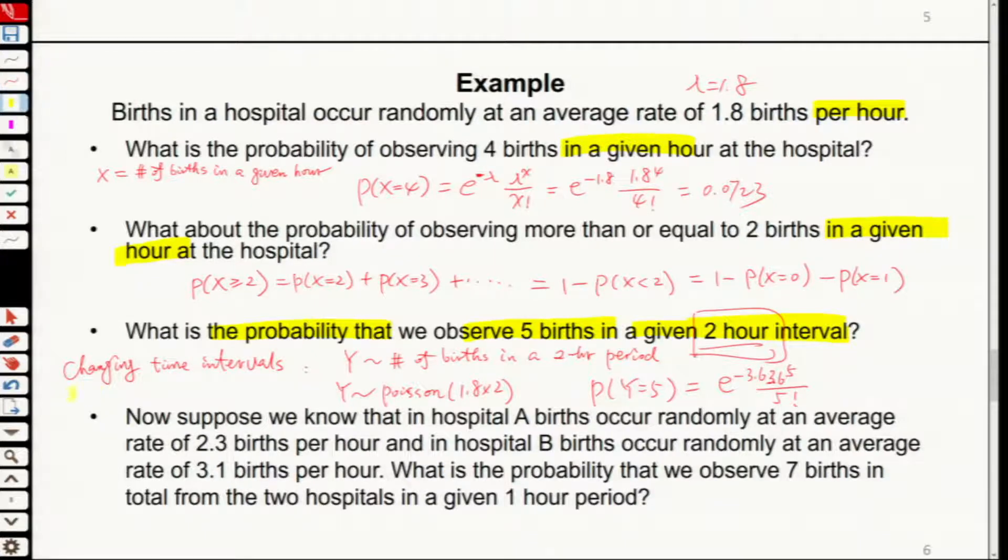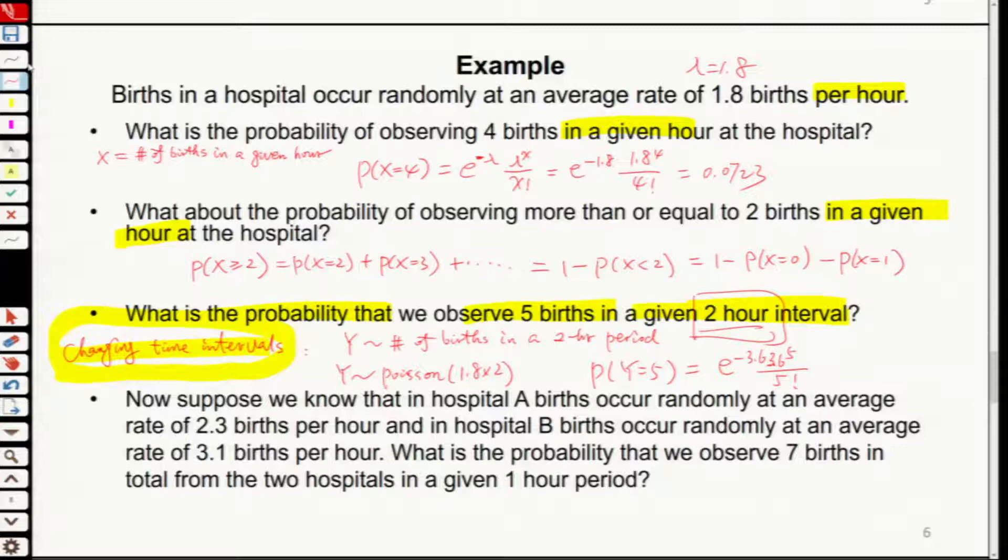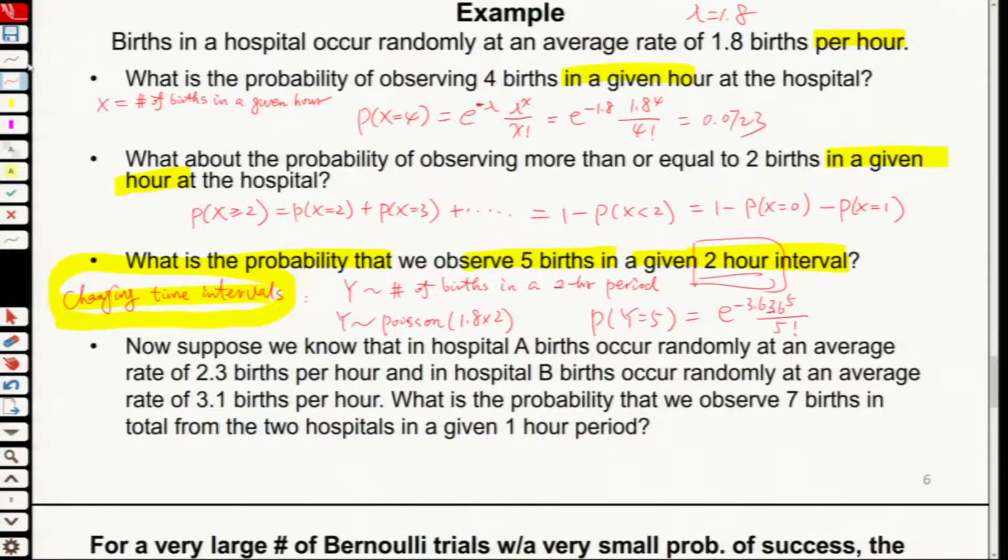While I'm giving this example, I hope to remind you about changing the time intervals. The next one is, suppose we know in hospital A births occur randomly at an average rate of 2.3 per hour, and hospital B at 3.1 births per hour. This is the rate. So you have two hospitals.